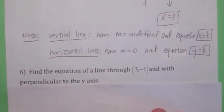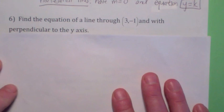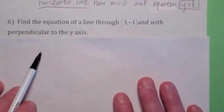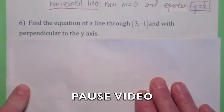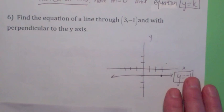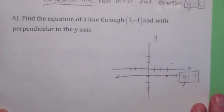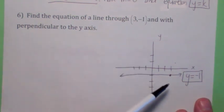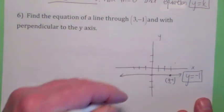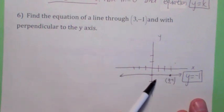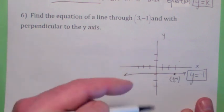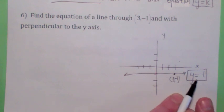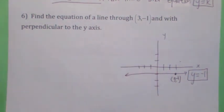Find the equation of a line that goes through the point 3, negative 1 and is perpendicular to the y-axis. Draw a picture. If it goes through 3, negative 1 and it's perpendicular to the y-axis, it has to be a horizontal line. So the equation has to be y equals something. Since the y-value is negative 1, it's always going to be negative 1. The answer is y equals negative 1.